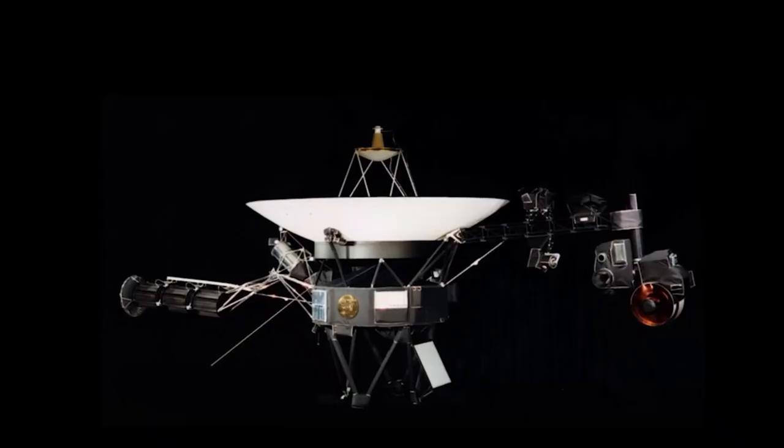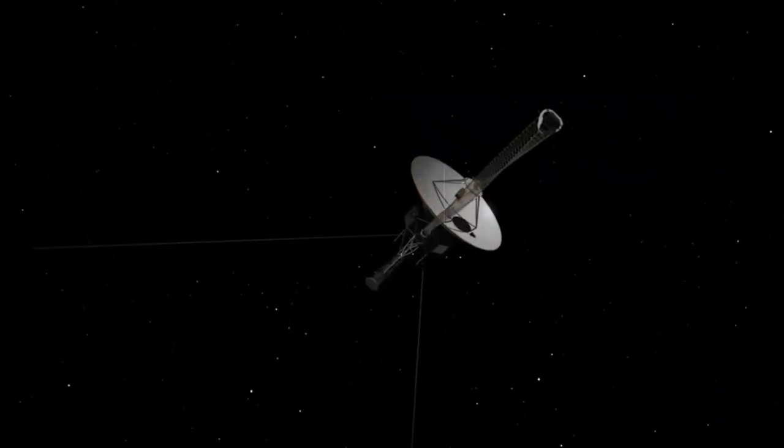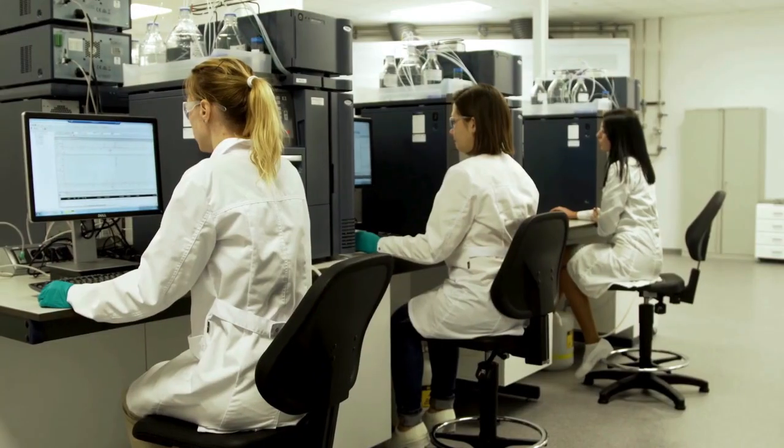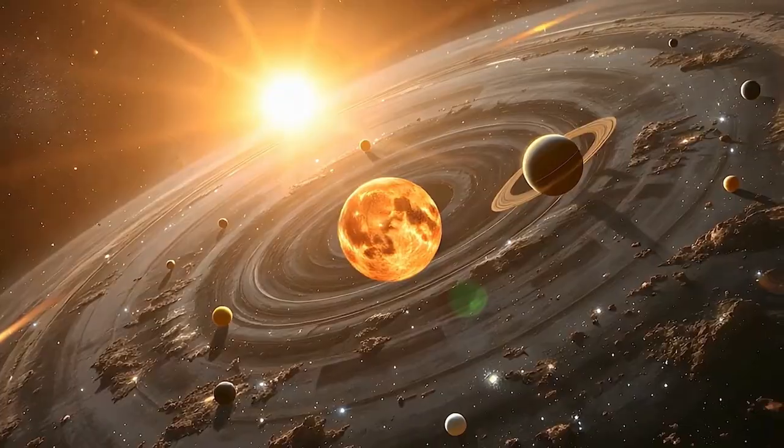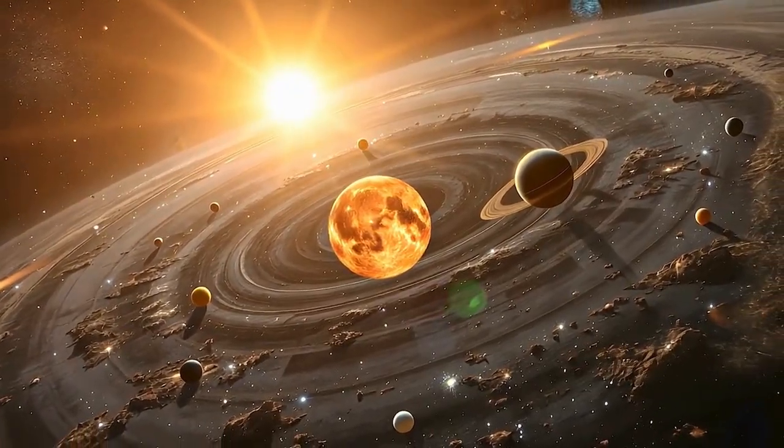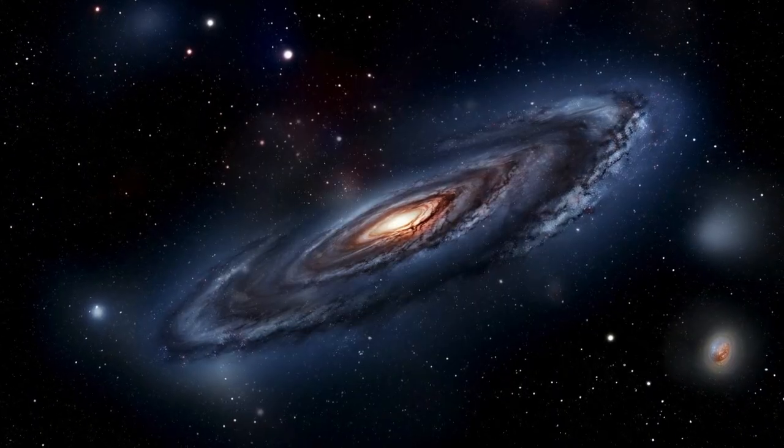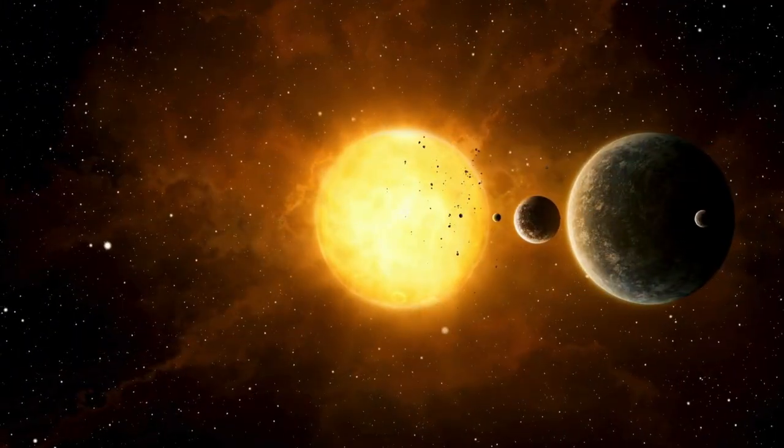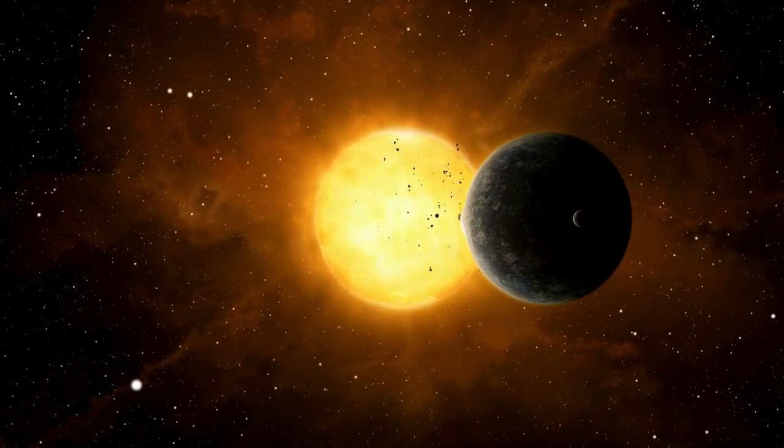After leaving Saturn, Voyager 1 was traveling at approximately 38,000 miles per hour relative to the Sun. As Voyager 1 left the planets behind, scientists reprogrammed its mission objectives to study the outer reaches of the Sun's influence and eventually the space between stars. The spacecraft carries the famous golden record, a time capsule of Earth sounds, images, and messages for any intelligent extraterrestrial life that might someday discover it.